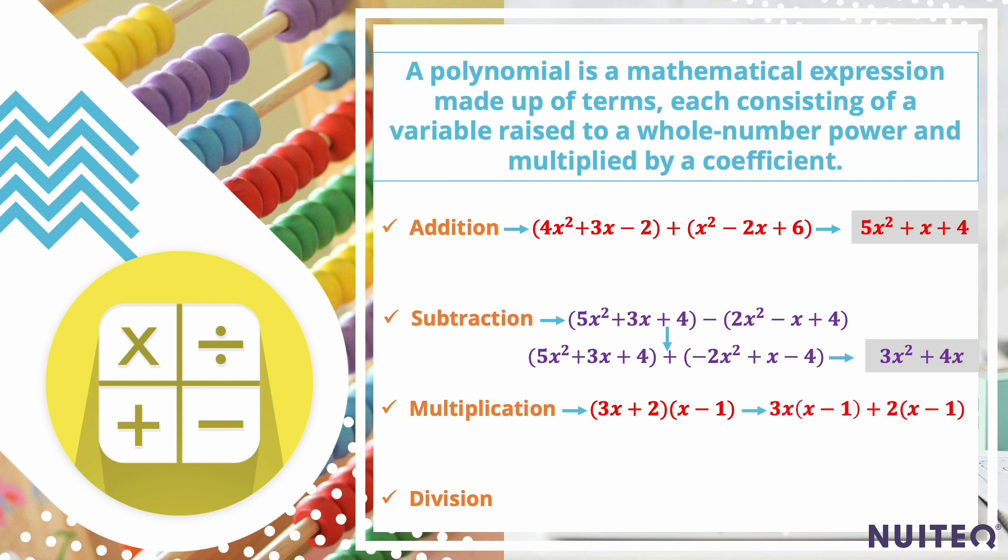To multiply two polynomials, use the distributive property to multiply each term in the first polynomial by each term in the second polynomial, and then combine like terms.